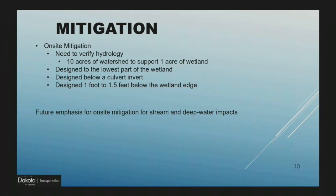For on-site mitigation, we need to verify the hydrology at step one. The general rule of thumb is 10 acres of watershed can support one acre of wetland. We need to pay attention and design the mitigation below the culvert invert. For a larger deep-type wetland, design the mitigation site a foot to a foot and a half below the wetland edge. We've received a few permits recently requiring mitigation for streams and deep water areas, so in the future there will be emphasis on on-site mitigation for streams and deep water impacts. We may have to think outside the box — ideas we're considering include removing sediment or purchasing a protective easement.